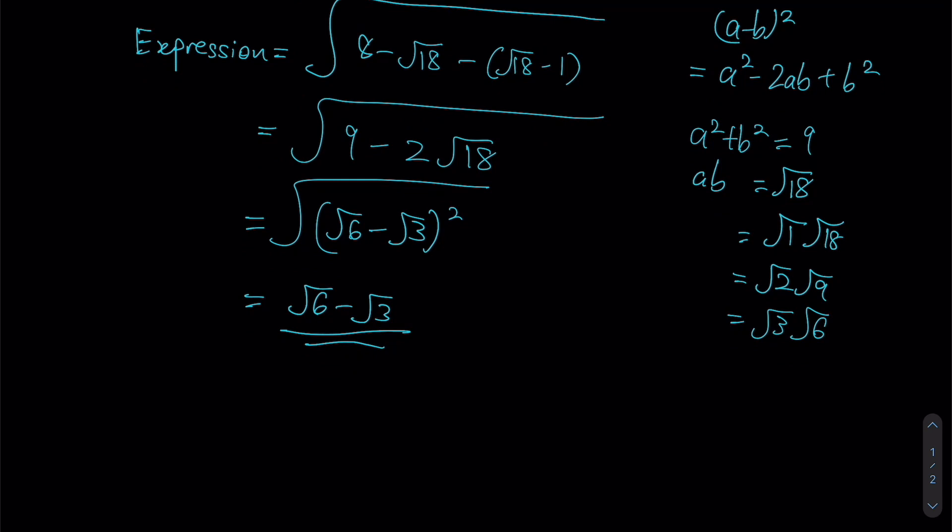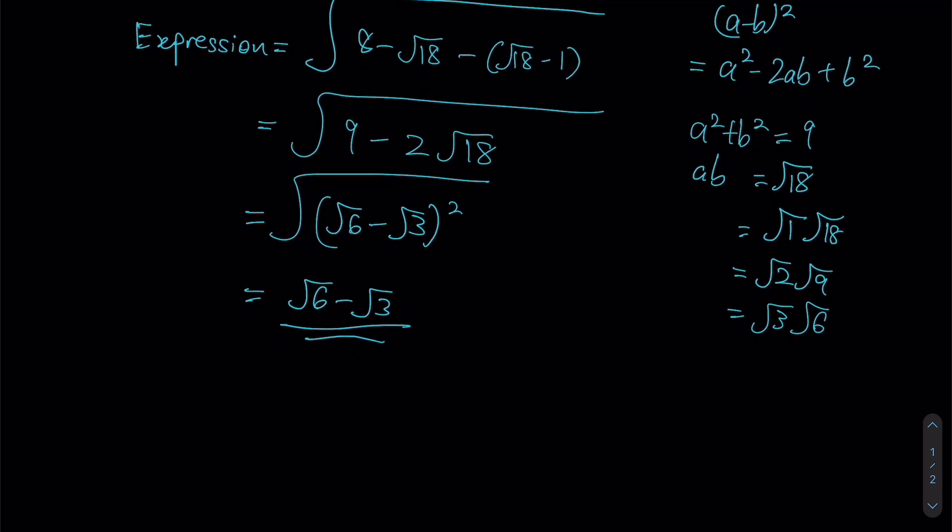The one that should come to mind should be 3 and 6, because root 3 squared plus root 6 squared will give me a value of 9, which would equal to your 9 over here. Therefore, it can be factorized into the form root 6 minus root 3 whole thing squared.